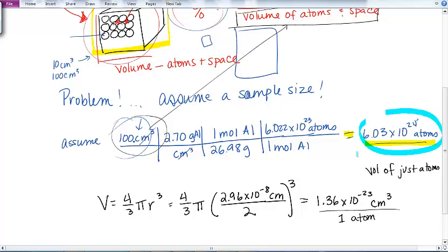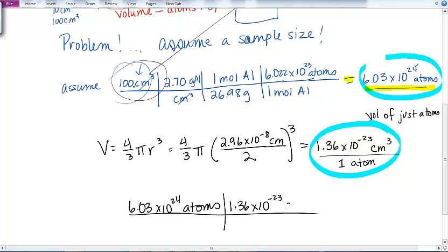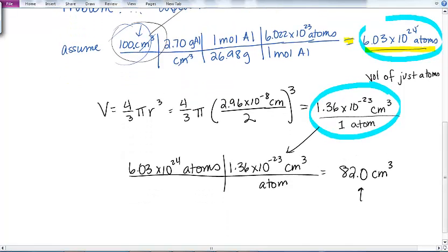So now I think, okay, I know how many atoms I have. And I know the volume of an atom. So I'm going to use that together. So I have 6.03 times 10 to the 24th atoms. Let's find out the volume of just those atoms. There's no empty space in that. That's just the atoms. So I know it's 1.36 times 10 to the minus 23 cubic centimeters per atom. Right? That's from here. And I don't know what that number turns out to be. So 6.03 times 10 to the 24th times 1.36 times 10 to the minus 23. And I get 81, oops, I've got to round it, 82.0 cubic centimeters.